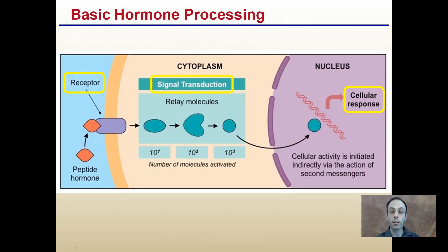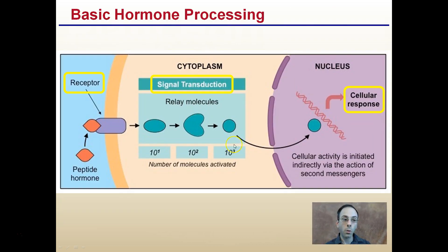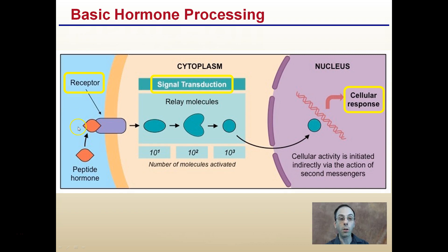So basic hormone processing in the general sense: we're looking at a receptor that binds. We have this hormone — again, they're produced in small amounts but they're binding to a specific receptor. Then there's signal transduction via relay molecules. The number of molecules activated can be increased exponentially. This is why hormones are needed in such small amounts, because they can initiate a large response through relay molecules.